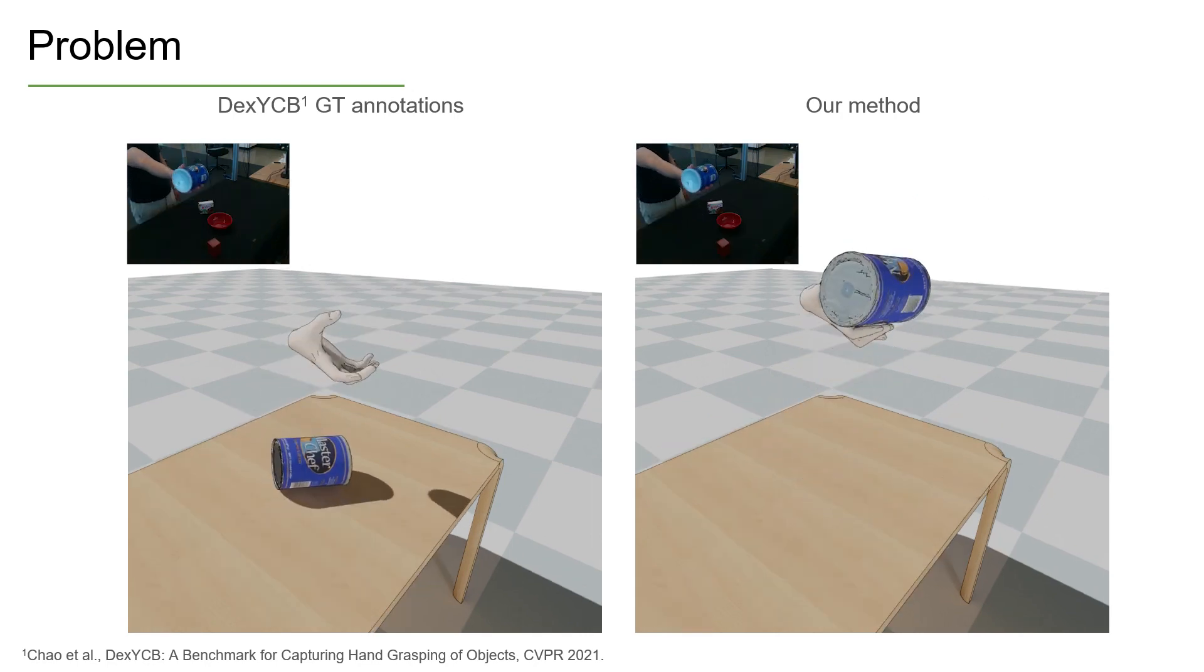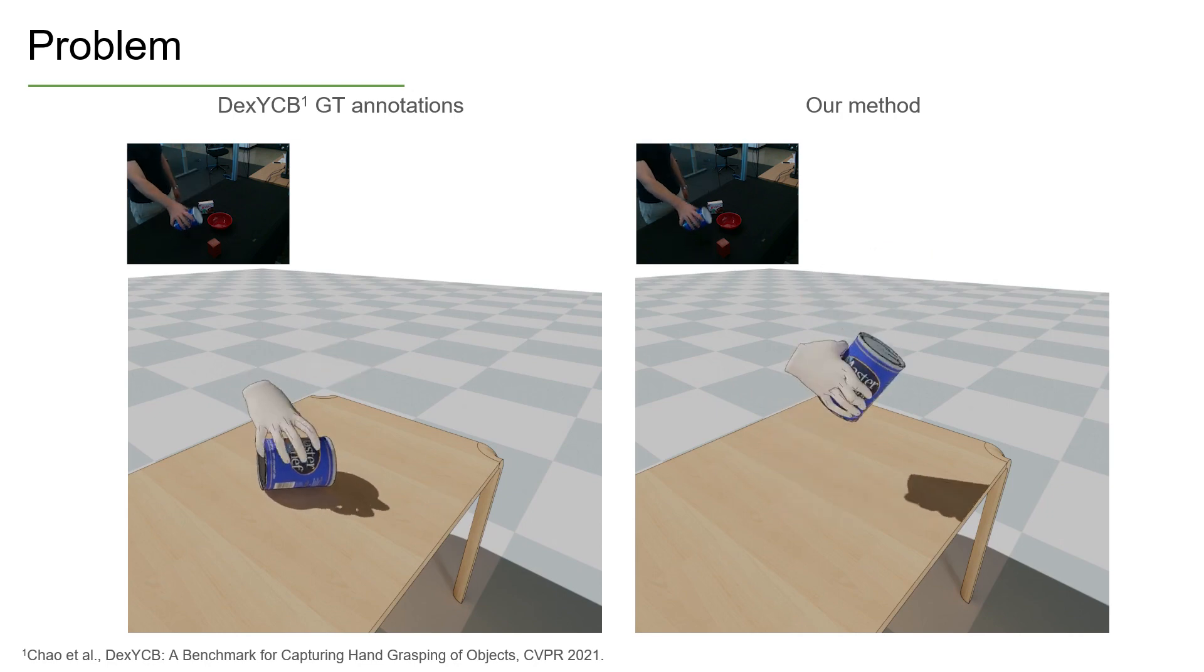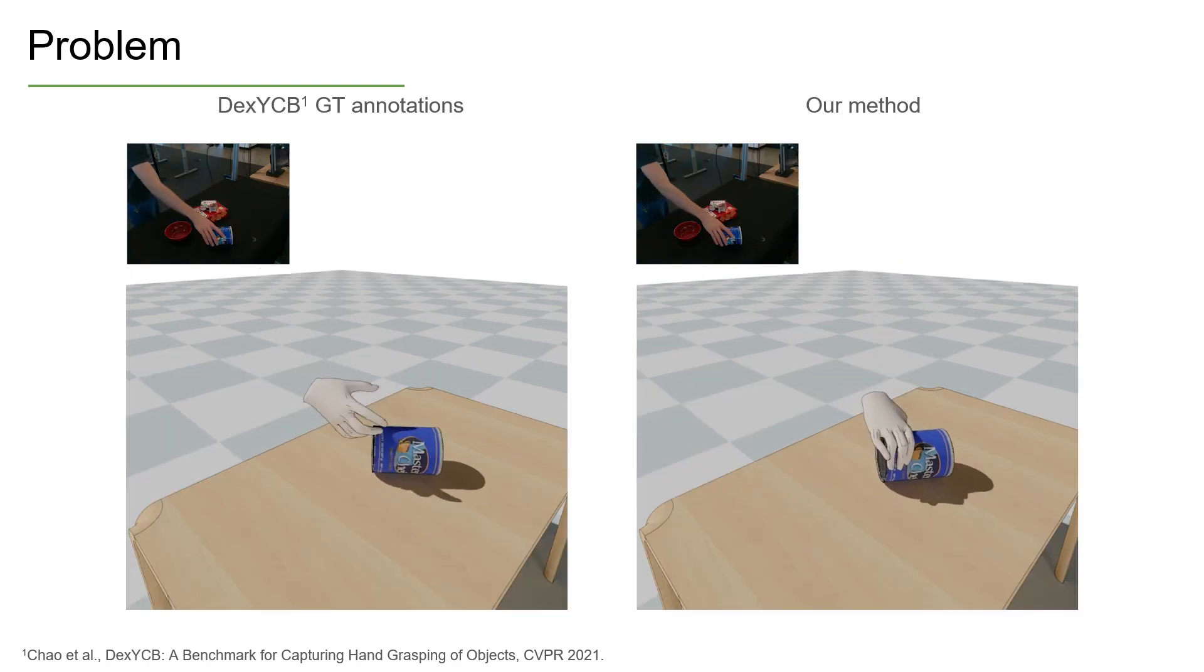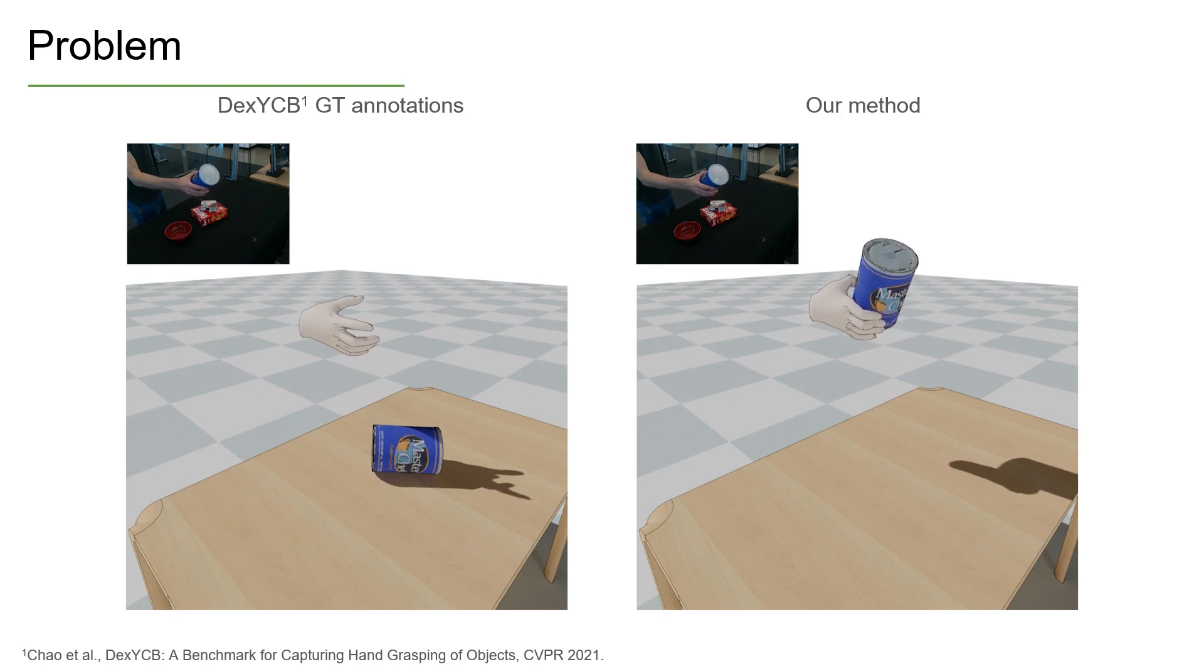Since these are not easily observable, both annotations from existing datasets and outputs from grasp synthesis methods or image-based pose estimates do not lead to stable grasping when simulated.